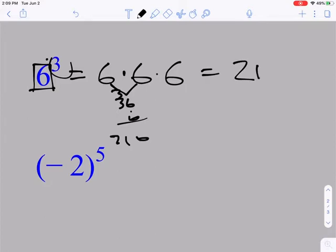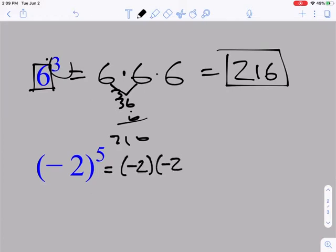So that would be 6 to the third power. If we did negative 2 to the fifth power, that would be the same thing as saying we're gonna multiply negative 2, and I put the parentheses around it to preserve that negative sign each time, so it means you multiply negative 2 five times.